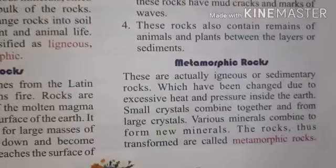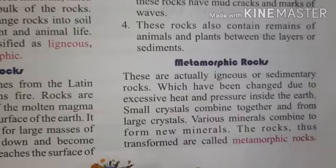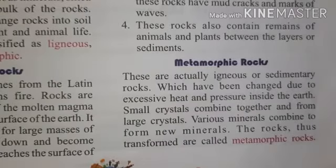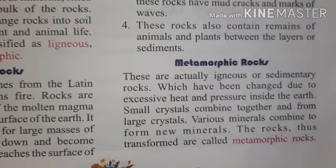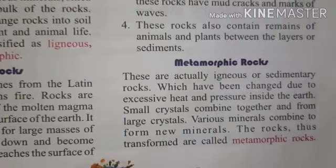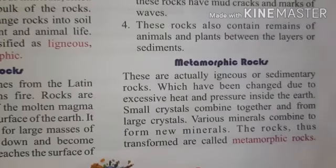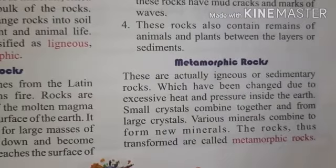Then next is metamorphic rock. Metamorphic means when there is excessive heat and pressure inside the earth — a lot of pressure and temperature — then small stones combine and crystals form, and that particular rock is known as metamorphic rock.